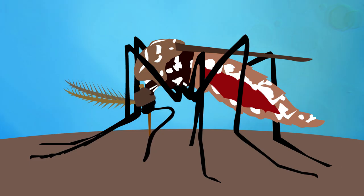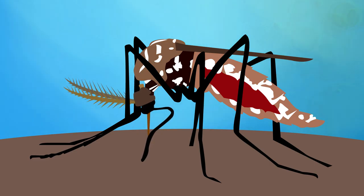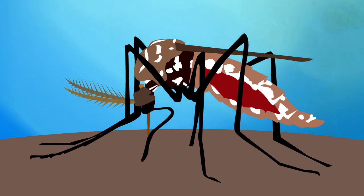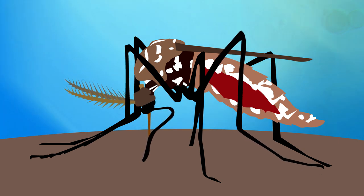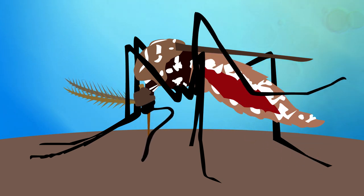When a mosquito bites someone infected with dengue, it draws in the blood containing the virus and can then spread it to someone else.